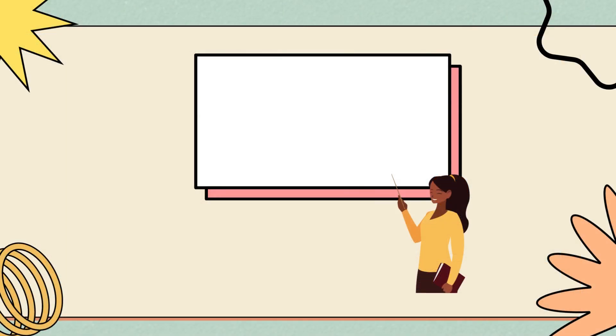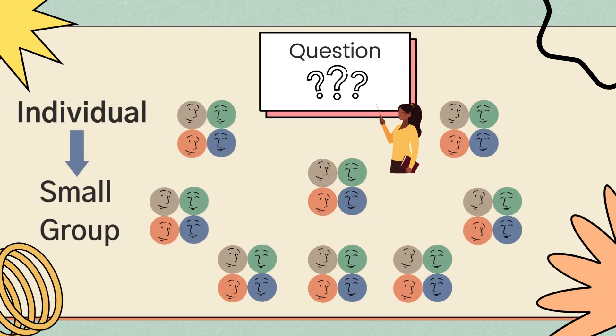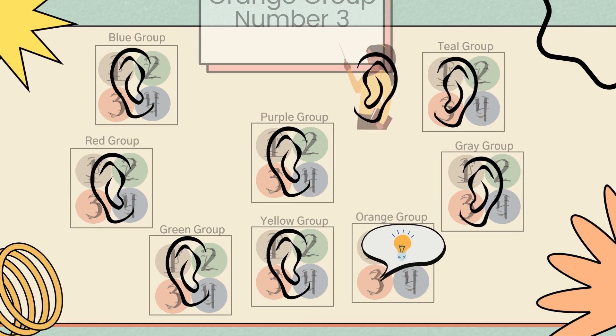The overall process has teachers ask a question that students think about individually. The teacher forms students into groups of four, with each student numbering off one to four. The group discusses the question, and then the teacher calls random numbers from each group to share.